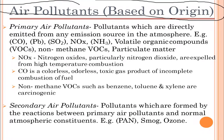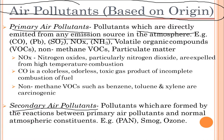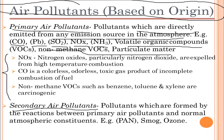Pollutants can also be classified based on their origin. Primary air pollutants are those directly emitted from any emission source into the atmosphere — examples include carbon monoxide, lead, sulfur dioxide, nitrogen dioxides, ammonia, volatile organic matter, and non-methane volatile organic compounds.